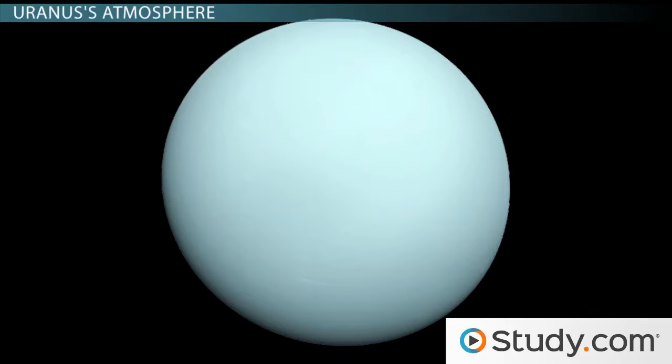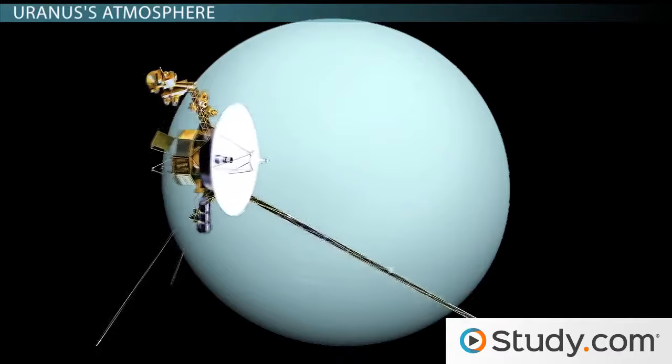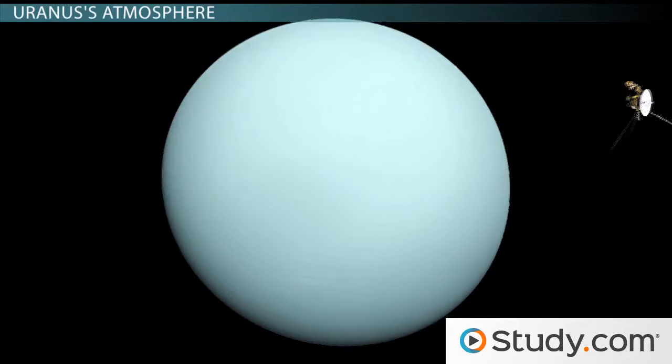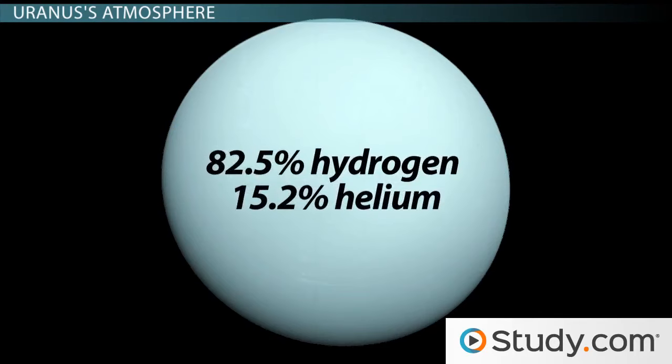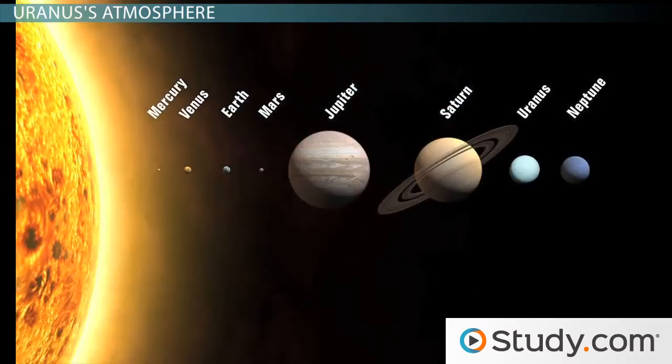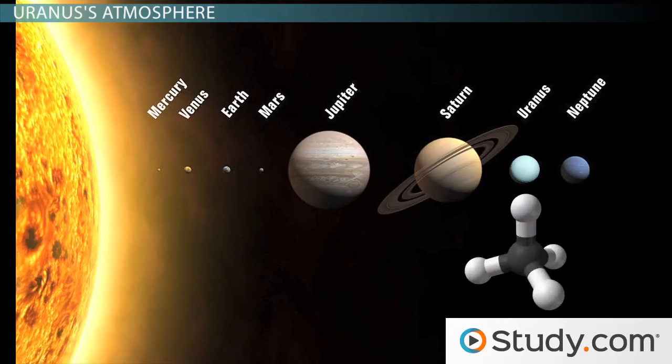Upon Voyager 2's flyby past Uranus, data confirm the Uranian atmosphere isn't massively different from Jupiter and Saturn. The Uranian atmosphere is composed of 82.5% hydrogen and 15.2% helium. One distinguishing factor that sets Uranus apart from Saturn and Jupiter is that it contains more methane in its atmosphere.